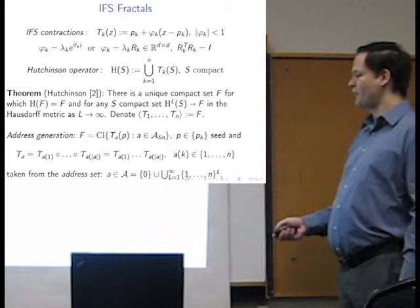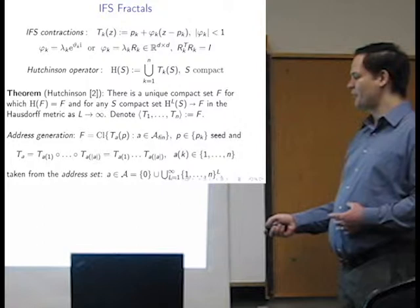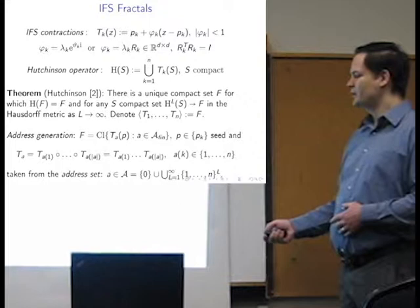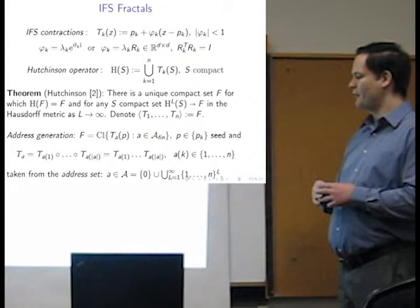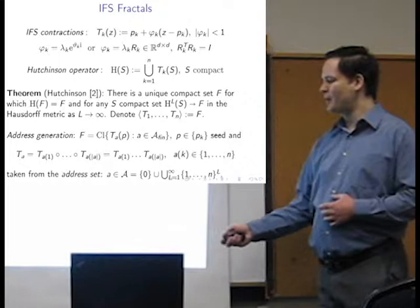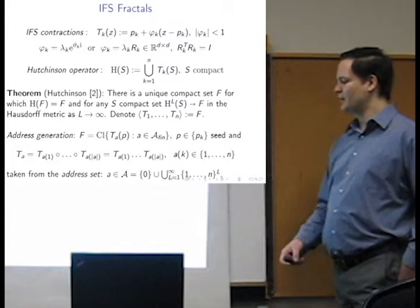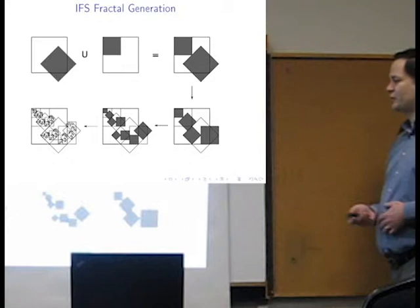So Hutchinson has this theorem that this operator has an attractor. So it can be proven in Hausdorff metric using the Banach fixed point theorem. So I'll be using this notation for the generator of T1 to Tn. So the indices will run from one to n. And so we have this standard generation, or this representation of the set, which is the closure of all the finite maps, the PA maps of some initial point or seed. Typically, we pick one of the fixed points. So I'll be using this notation PA.